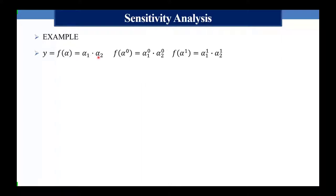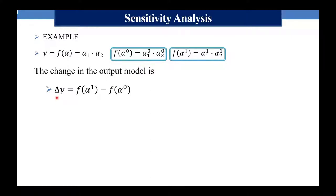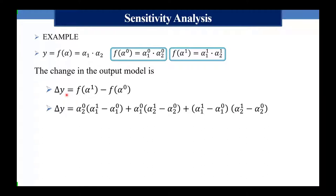Un esempio semplice: prendiamo una funzione alfa_1 per alfa_2, che potrebbe essere il costo totale (costo per quantità) o i ricavi totali (prezzo per quantità). Prendiamo il caso 0 e il caso 1; i valori assunti dalla funzione sono diversi. La variazione delta_y = f(alfa_1) - f(alfa_0) può essere riscritta tramite una banale manipolazione algebrica come somma di tre componenti, per capire il concetto di contributo individuale e contributo interattivo.